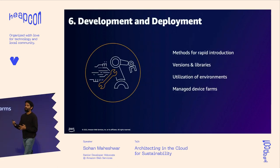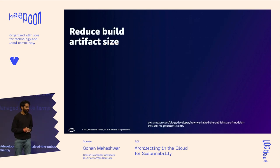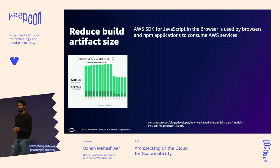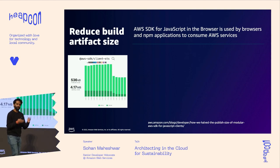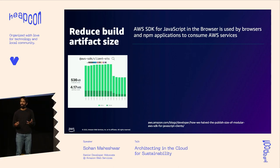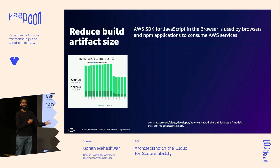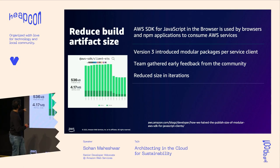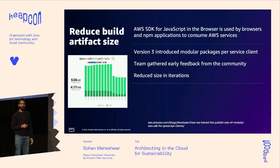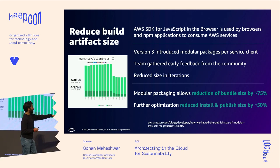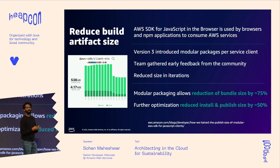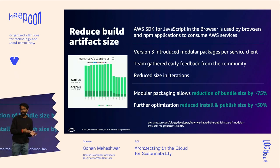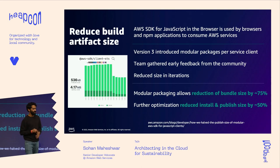The entire process of development and deployment matters too. The AWS SDK for JavaScript grew to about 4.17 MB as an install file size. When we switched from version 2 to version 3, we made it modular so people could choose only the services they need, reducing the build and publish size to 536 KB. We reduced our bundle size by about 75% just by paying attention to build artifact size. In your dev processes, see how you can reduce your build artifacts too.